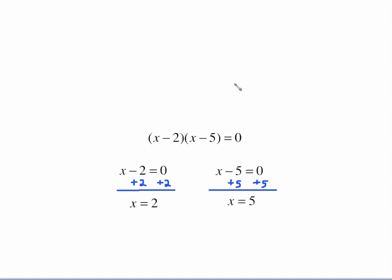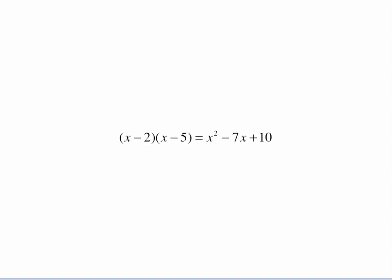Now you might say, wait a minute, that doesn't look like a quadratic. There's no x squared there. Hopefully you recognize from your foiling days that if we multiplied x minus 2 times x minus 5 together, we get x squared minus 7x plus 10, which is a quadratic.